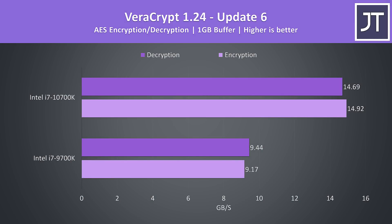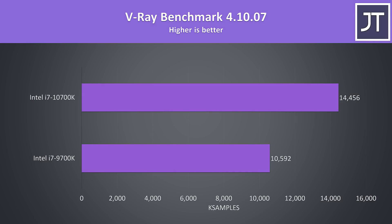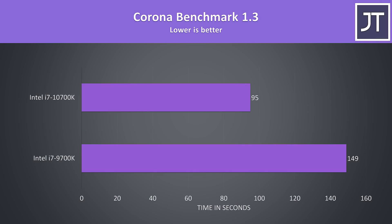Veracrypt was used to test AES encryption and decryption speeds, and this test saw the biggest difference out of all apps tested. The 10700K was performing encryption operations 63% faster than the 9700K, while decryption was 56% faster. The V-Ray benchmark uses the processor to render out a scene, and as a threaded test it's a big win for the 10700K, scoring 36% higher than the 9700K. The Corona benchmark also renders a scene, and there was an even bigger difference here, with the 10700K completing this heavily threaded test 57% faster.